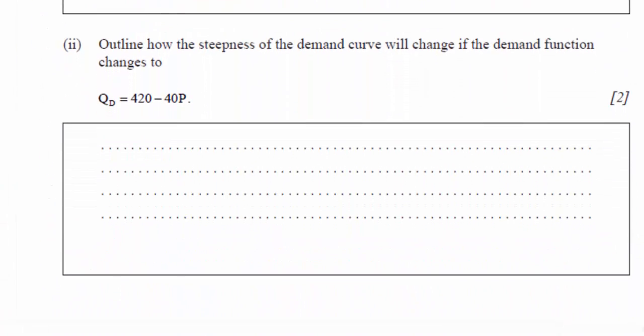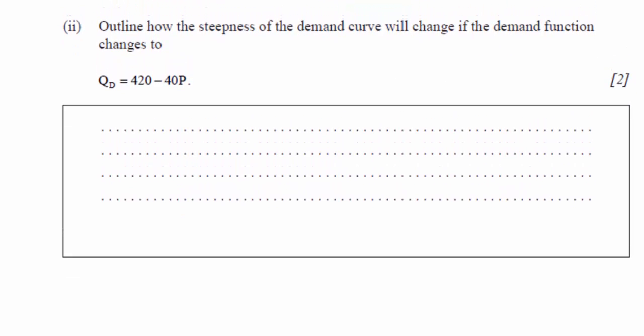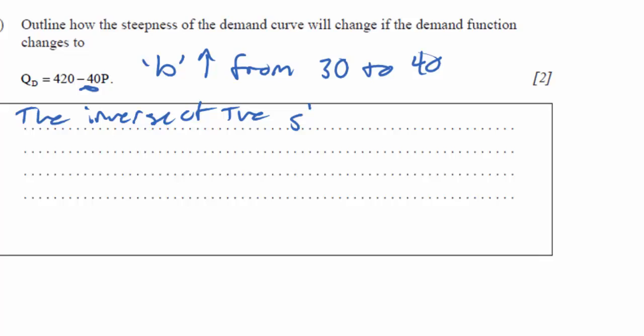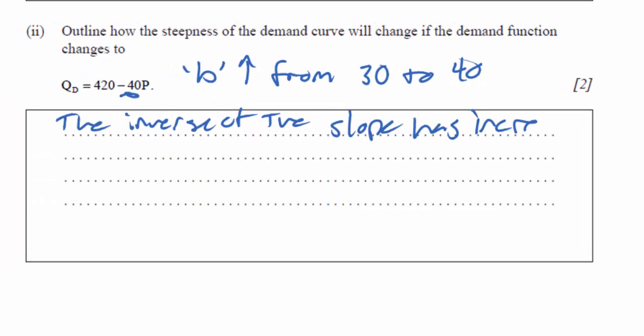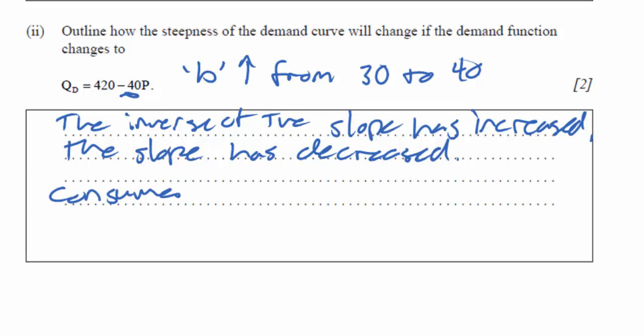The next question, outline how the steepness of the demand curve will change if the demand function changes to Qd equals 420 minus 40P. So what's changed here? Now the b variable has increased from 30 to 40. What does this tell us? This tells us that the inverse of the slope has increased. That's another way of saying the slope has decreased.